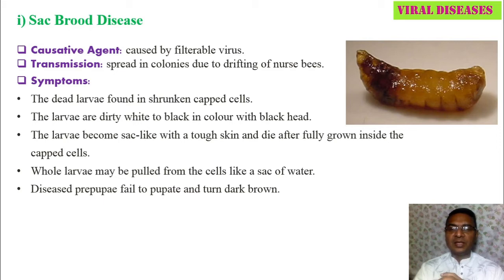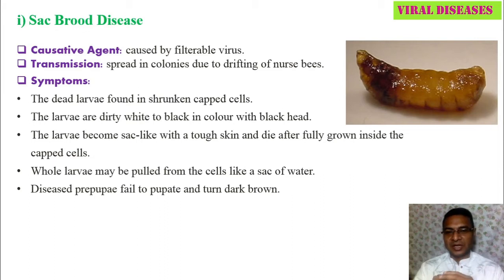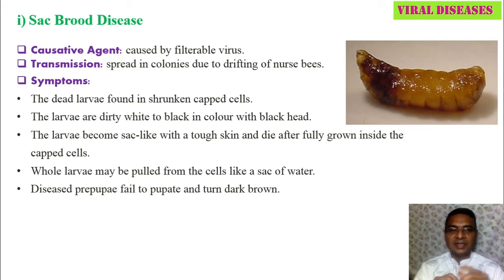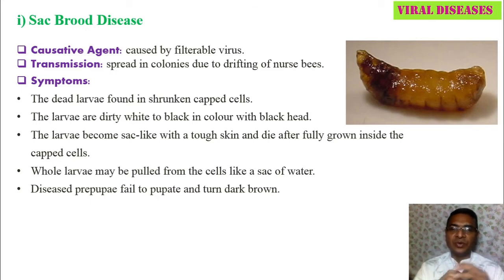As for symptoms: dead larvae are found in shrunken capsules. The larvae are dirty white to black in color — normally larvae are whitish or creamy yellowish, but as infection progresses, the larval body color changes to dirty white to black with black heads. The larvae become sack-like with a tough skin and die after full growth inside the capsules, because the full-grown larva transitions to the pupal stage.